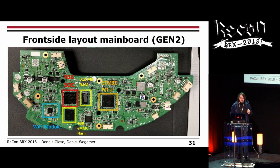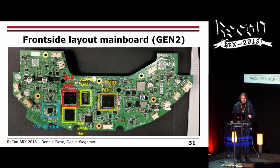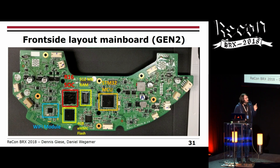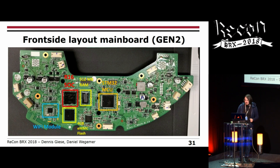One difference: high-class Xiaomi products are usually distinguished by black PCBs, while the generation 2 has a green PCB, which is way easier to reverse engineer than the black ones where it's very hard to even trace the lines.